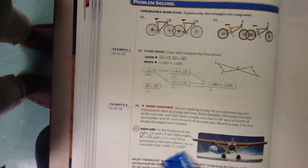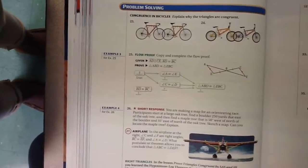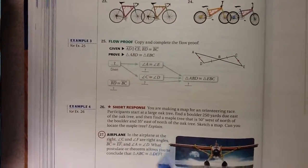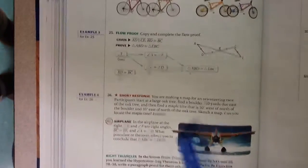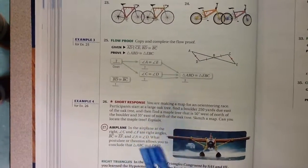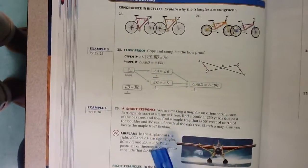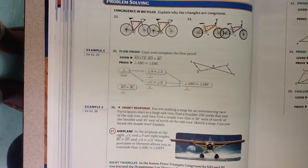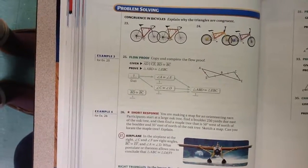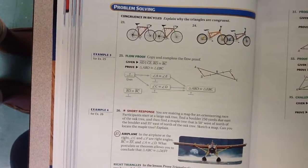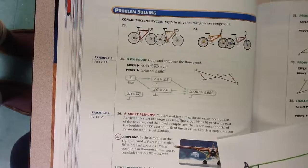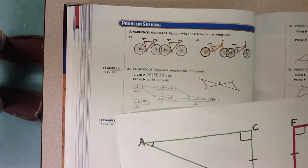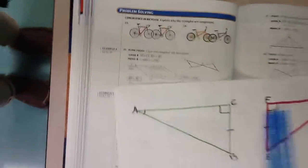The problem says: In the diagram at the right, angles C and F are right angles, segment BC is congruent to segment EF, and angle A is congruent to angle D. What postulate or theorem allows you to conclude that triangle ABC is congruent to triangle DEF? Here we have our triangles, left and right.